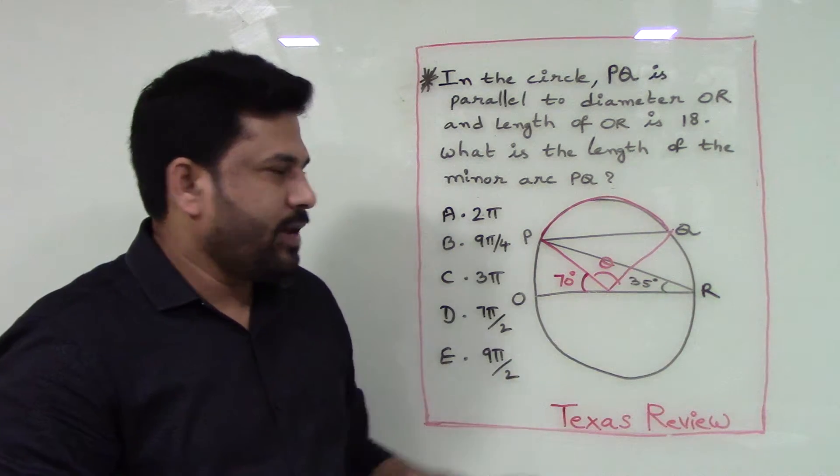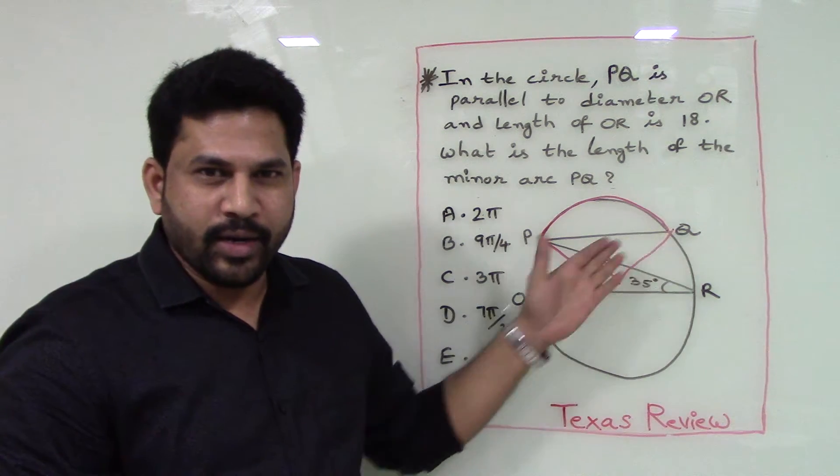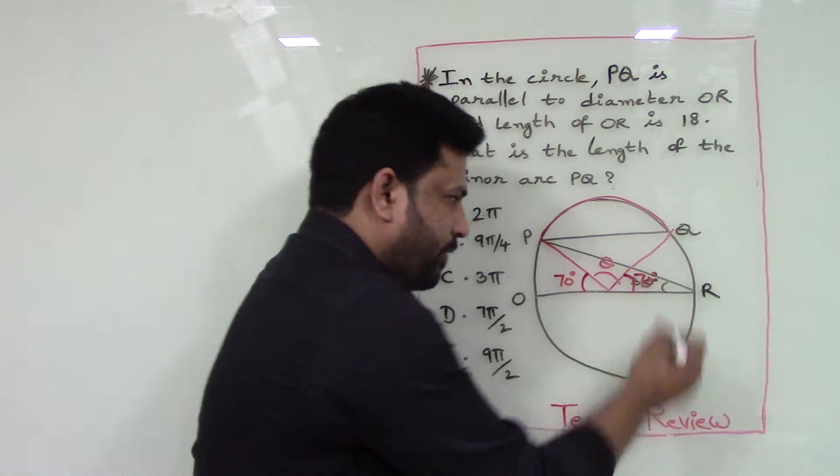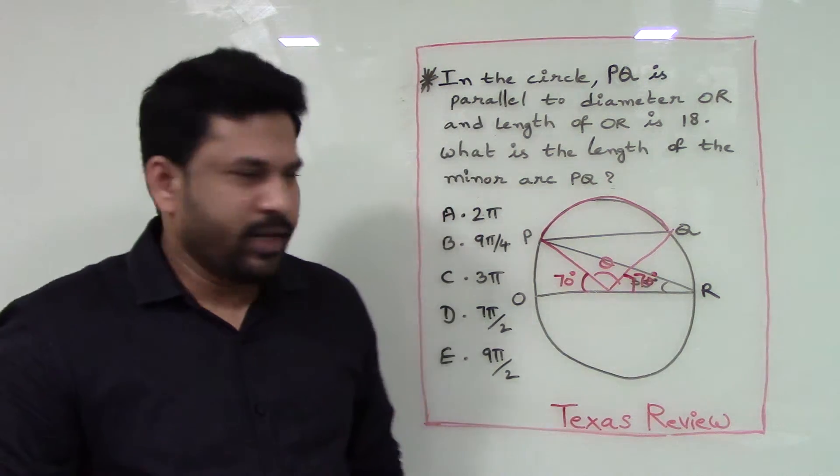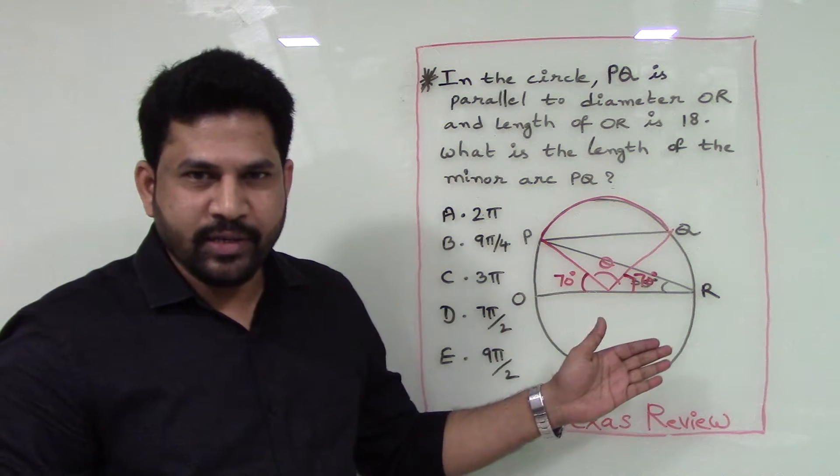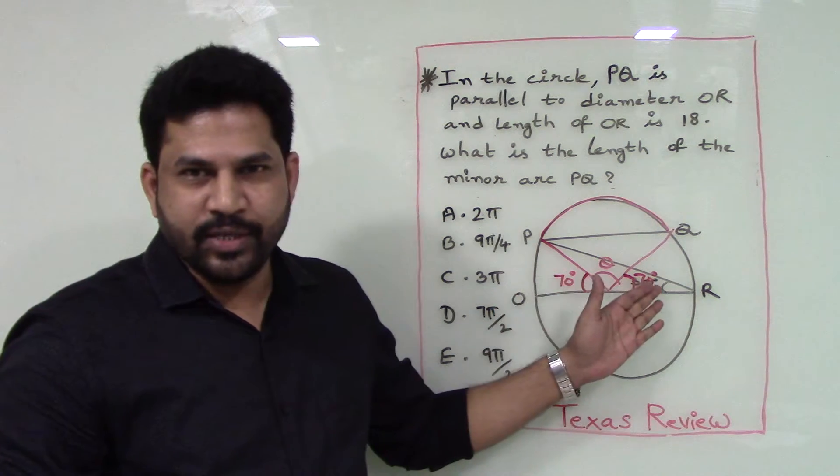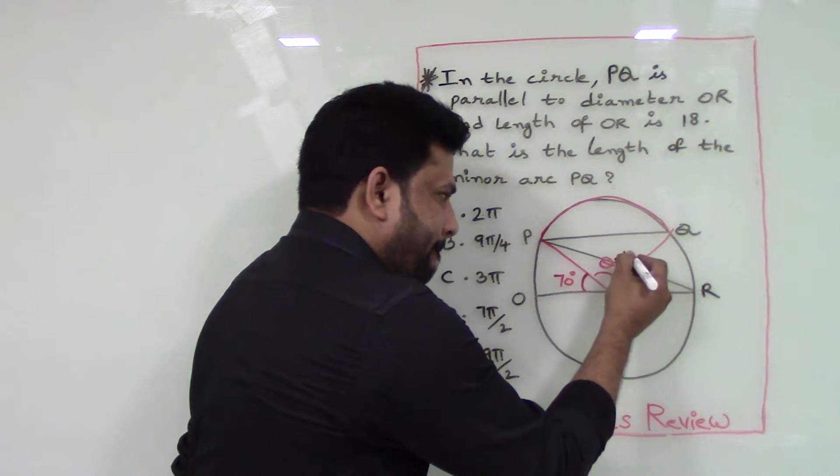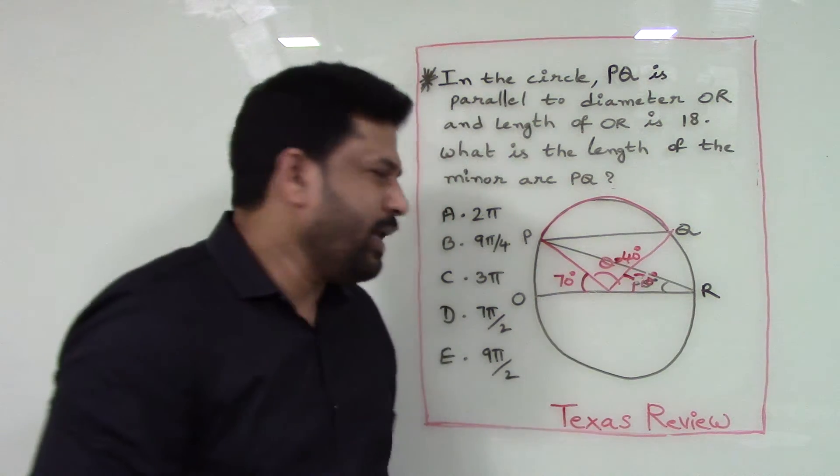And the angle made by QR at the center should also be 70 degrees. Now we know that the angle on a straight line is 180 degrees, and there are two 70s here, so the remaining is 40 degrees.